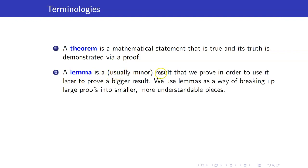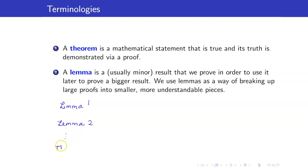A lemma is usually a minor result that we prove in order to use it later to prove a bigger result. We use lemmas as a way of breaking up large proofs into smaller, more understandable pieces. For example, you can have lemma 1, then lemma 2, and then the theorem as the main result. If you do not use lemmas, the proof of the theorem will be very long, but breaking it into smaller pieces keeps it manageable.